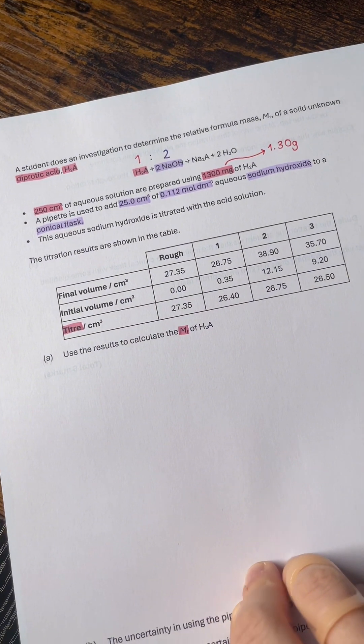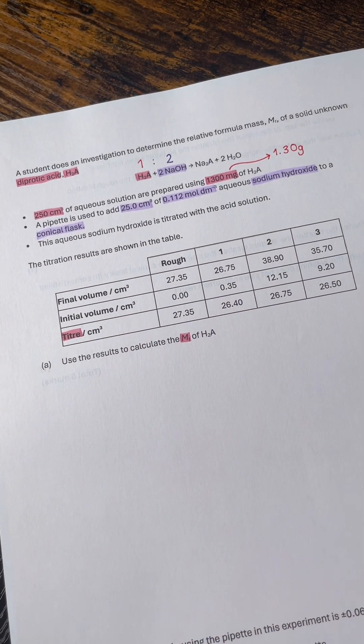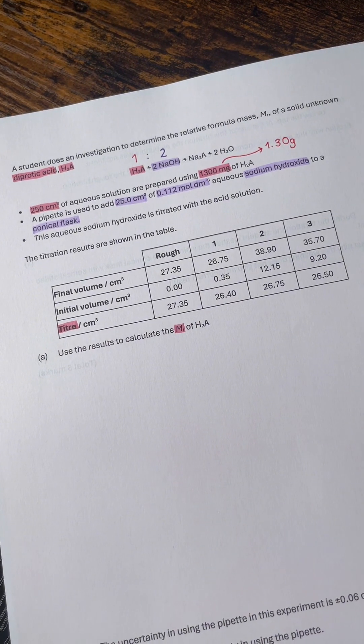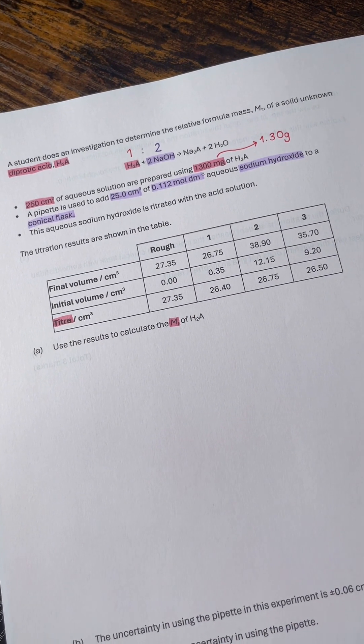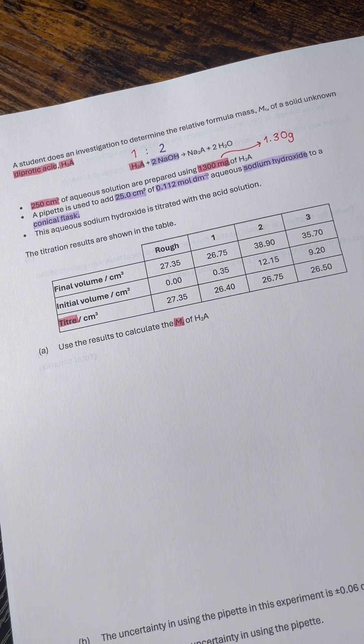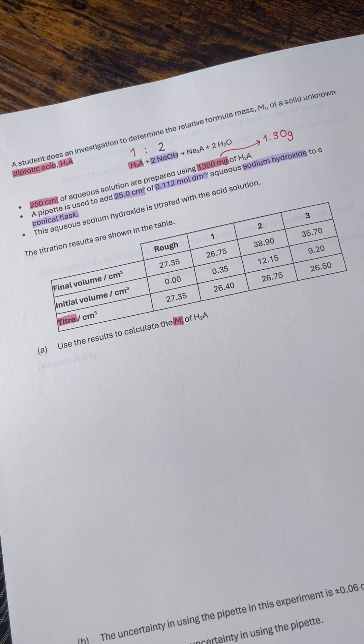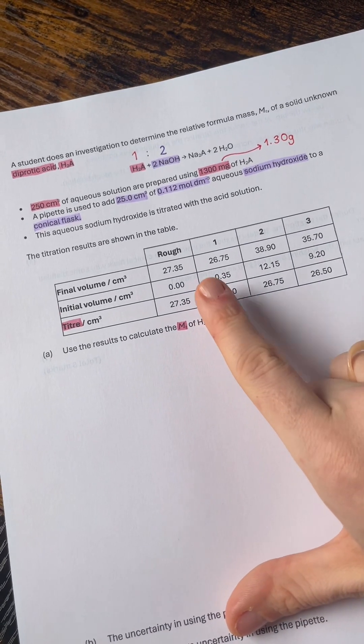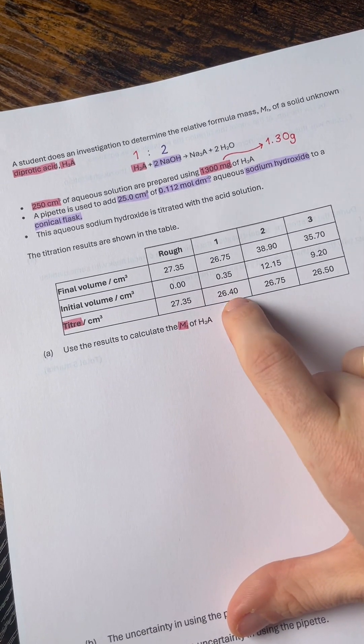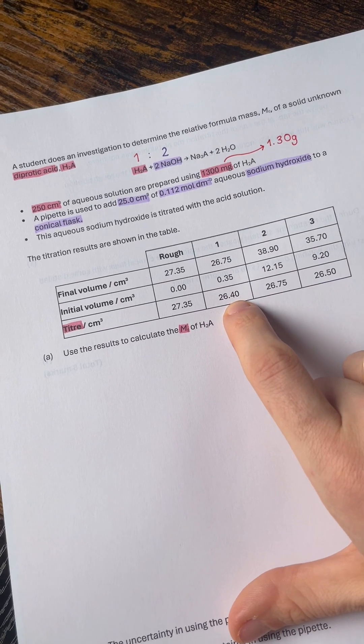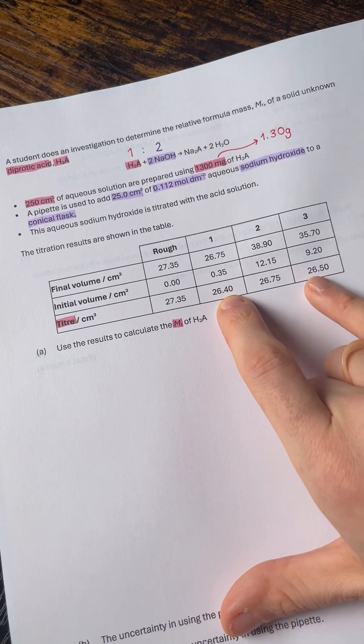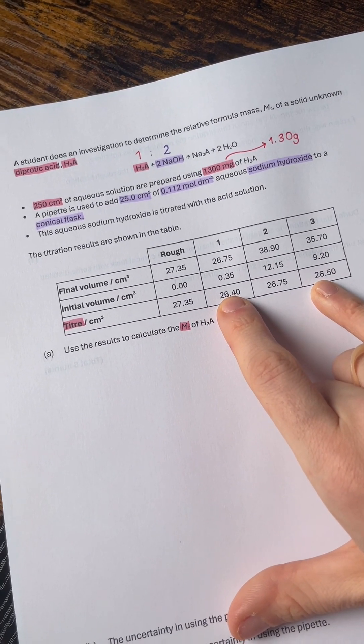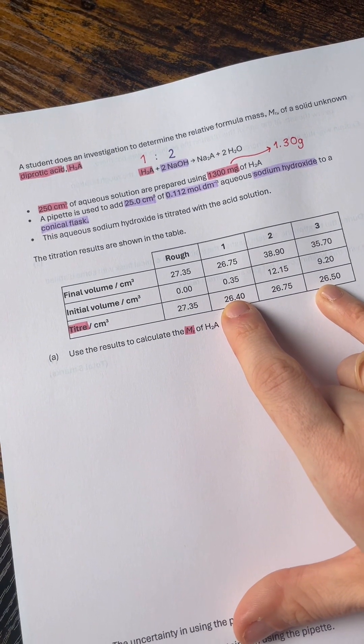That's all my information highlighted. Now the four things that I think you will always be asked to do with a back titration calculation are as follows. Notice how we're starting with the last piece of information given and working backwards through the data. First thing we're going to have to get the mean titer from this results table, so we're going to find our concordant results, we're going to add them and divide them by two. That's going to give me the mean titer of the H2A.